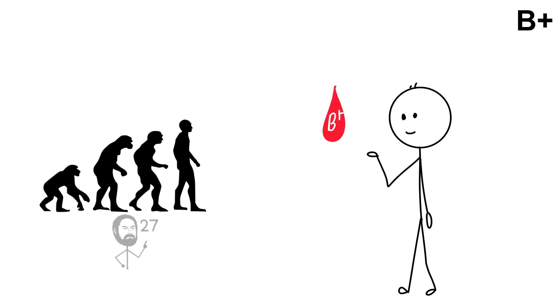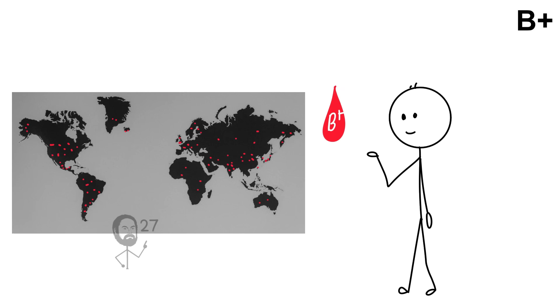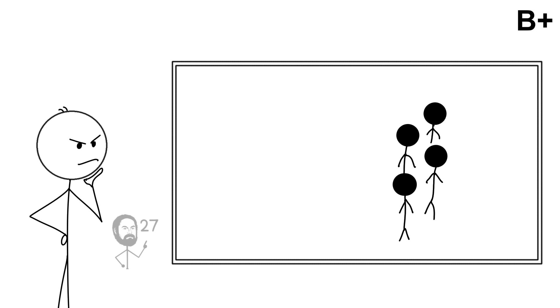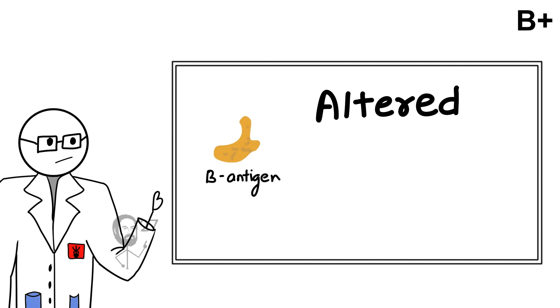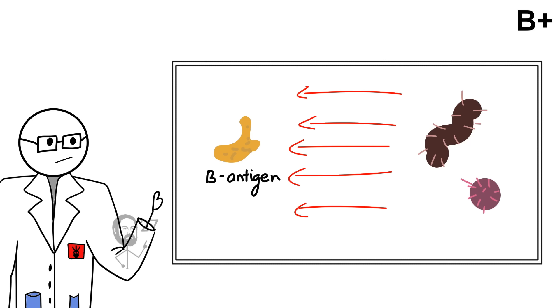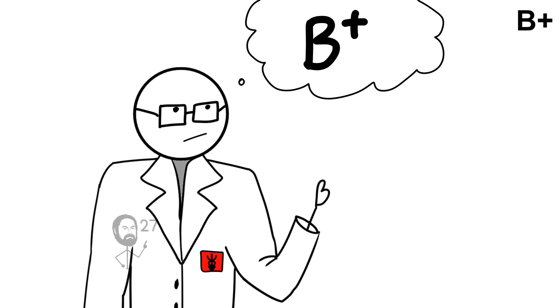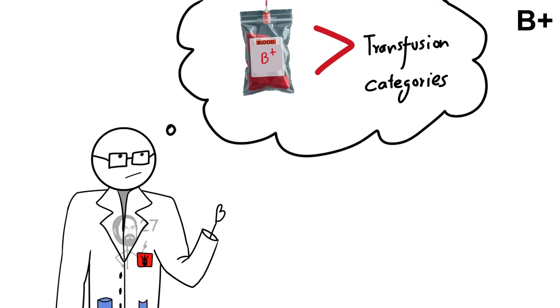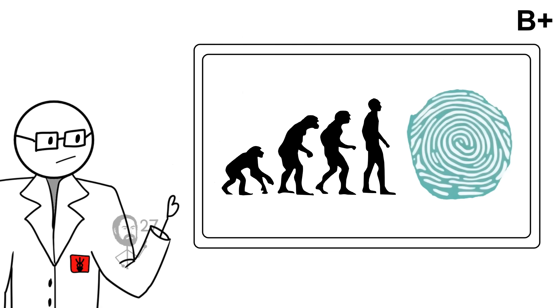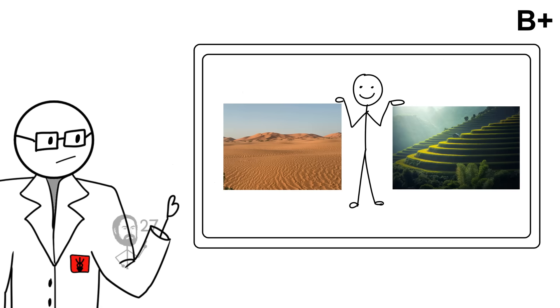From an evolutionary perspective, type B shows a fascinating distribution pattern. It is particularly concentrated in parts of Asia and the Middle East, suggesting that ancient population movements and selective pressures allowed it to spread unevenly across the globe. Research also links the B antigen with altered susceptibility to certain infections, offering protection against some bacteria while creating vulnerabilities to others. At the same time, the B-type has been noted in studies of metabolism, with some evidence pointing toward differences in how carbohydrates and fats are processed. These subtle distinctions reveal how blood types are more than transfusion categories. They are evolutionary fingerprints reflecting how humans adapted to different environments over thousands of years.